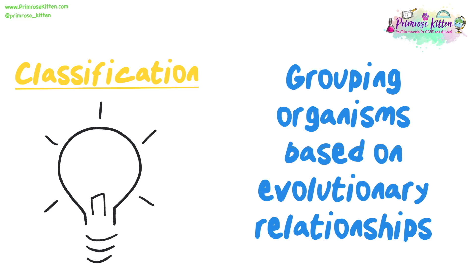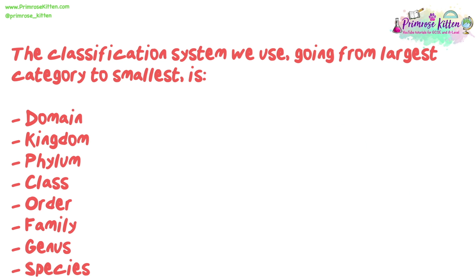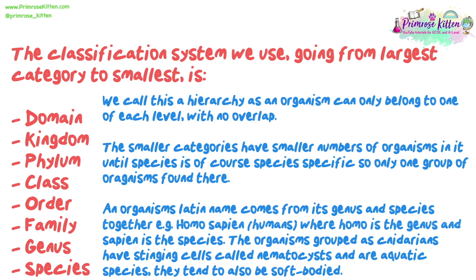You may have looked at classification at GCSE, but if not, classification is grouping organisms based on evolutionary relationships. The classification system we use, going from largest category to smallest, is Domain, Kingdom, Phylum, Class, Order, Family, Genus and Species. We call this a hierarchy, as an organism can only belong to one of each level with no overlap. The smaller categories have smaller numbers of organisms in them, until species is of course species-specific, so only one group of organisms is found there.